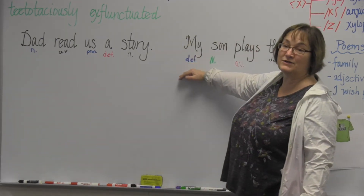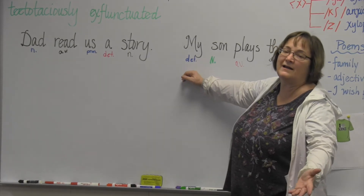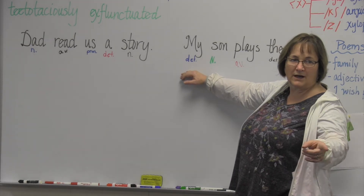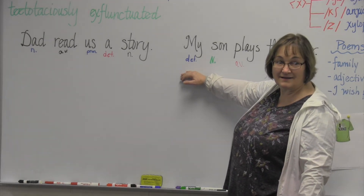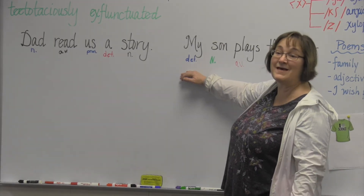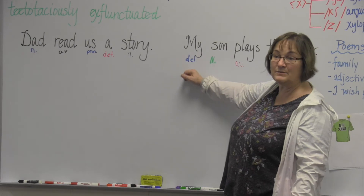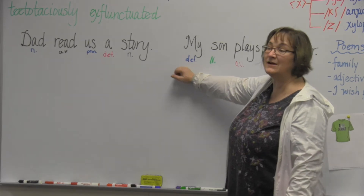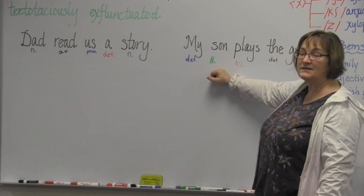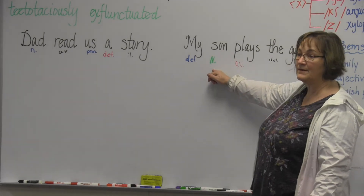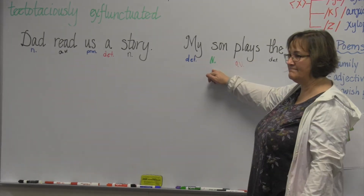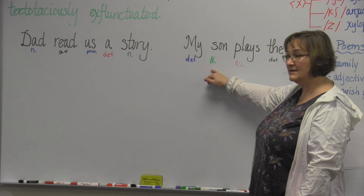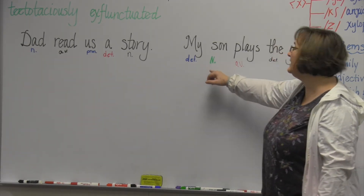Tell me about "my," the determiner — we've already established it must be a determiner, but what kind? Who knows what kind of determiner "my" is? It's a possessive determiner. And that makes sense because the son belongs to me, right? My son. A determiner always announces a noun, so we know "son" is a noun. What can you tell me about the noun "son"? It's concrete. Common. And singular. Excellent — common, concrete, and singular.